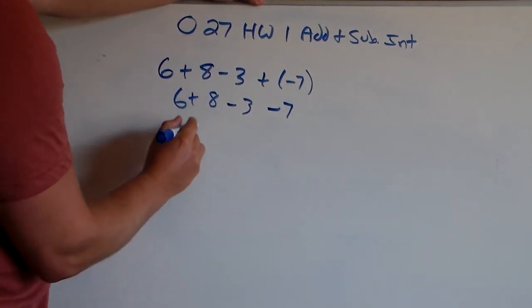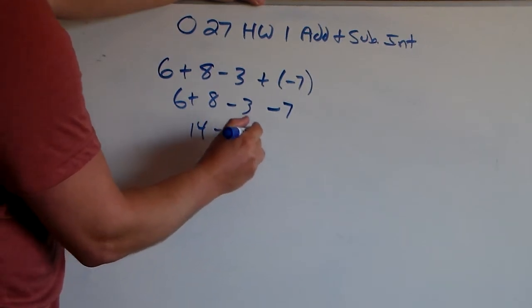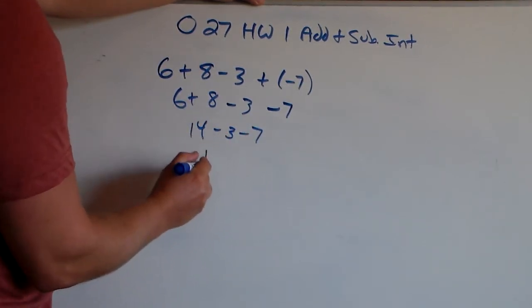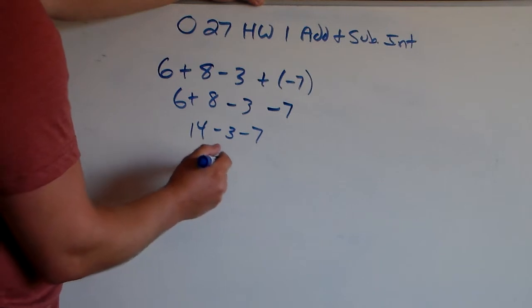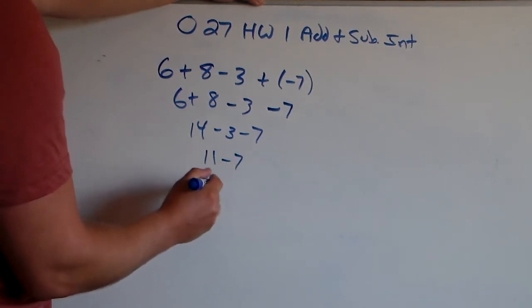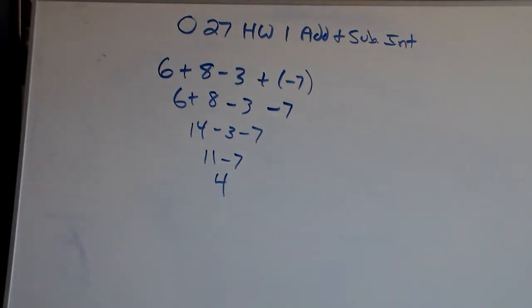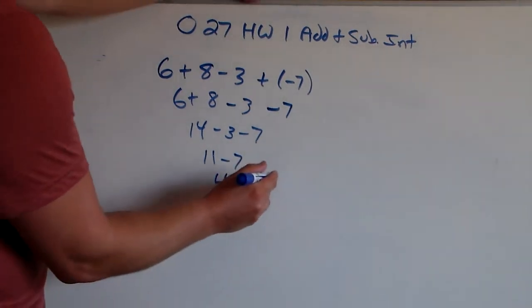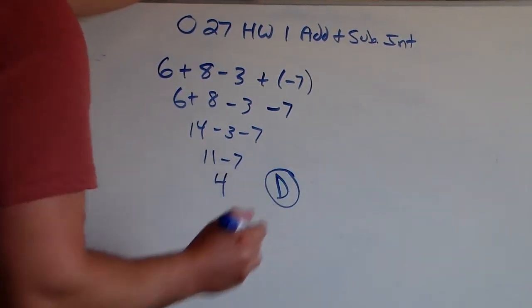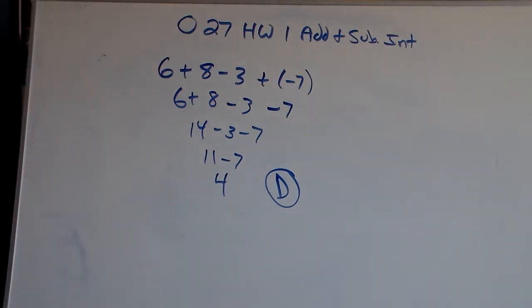6 plus 8 is 14. 14 minus 3 gets you 11. And 11 minus 7 gets you 4. So, problem number 3, the answer is 4, which is D in the multiple choice. We just have to practice being careful with our signs and combining our like terms or integers that are the same.